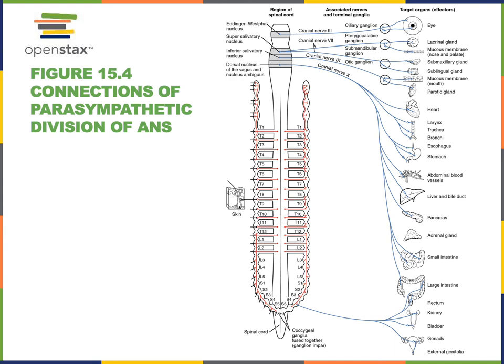The parasympathetic division of the nervous system stimulates the rest-and-digest maintenance functions of the body. When the body is relaxed, the parasympathetic nervous system becomes dominant. Functions include constriction of the pupils — cranial nerve three, the oculomotor nerve, carries preganglionic parasympathetic fibers to the ciliary ganglion, and then postganglionic fibers travel from the ciliary ganglion into the eye to regulate contraction of the smooth muscle of the iris and also the ciliary muscle that controls the shape of the lens.